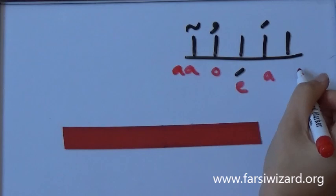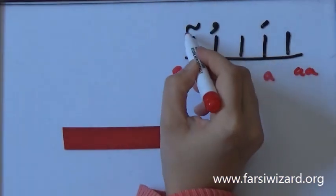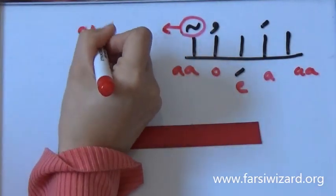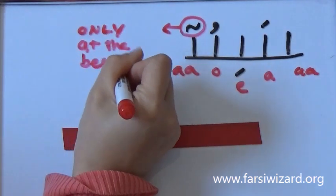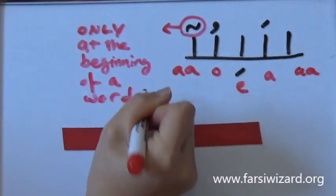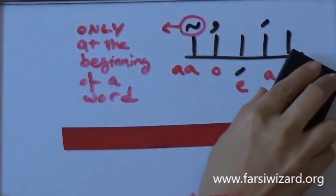Now Aleph by itself is also A if it's in the middle or at the end of a word. So here you see a hat on top of Aleph and this hat appears only when you write a word which starts with the sound A. Otherwise, you don't need to put that hat. I'm going to zoom in and explain to you one by one how each of these cases would work.